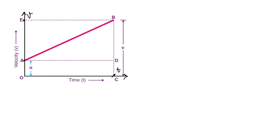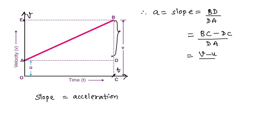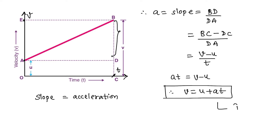Now since it is a velocity-time graph, we can find out the slope of the graph, and the slope of a velocity-time graph gives acceleration. So acceleration equals slope, which equals BD upon DA. BD equals BC minus DC, which equals v minus u, and DA equals t. On rearranging, we get at = v − u, and hence v = u + at. This is equation number 1.